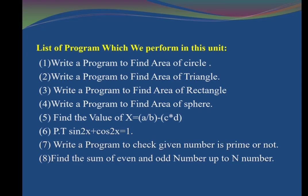Next is: find the value of x = (a / b) - (c × d). In this program, the first bracket contains a divided by b, and the second bracket contains c into d. You must write the formula exactly as given in the question, insert four values a, b, c, d using cout and cin, and then print the value of x. Next is to prove that sin²x + cos²x = 1; that program will also be run and demonstrated, along with a prime number program.